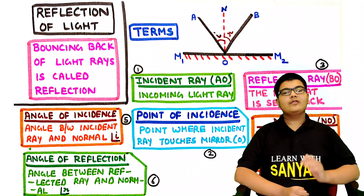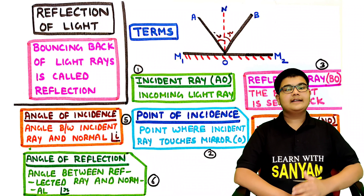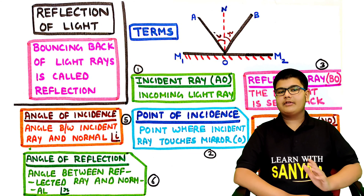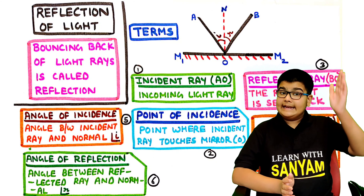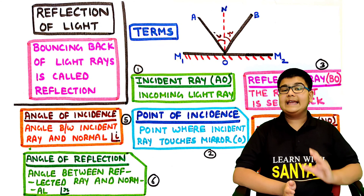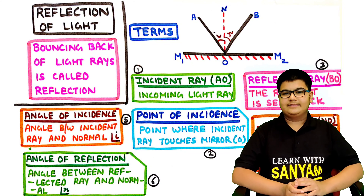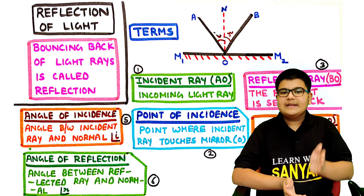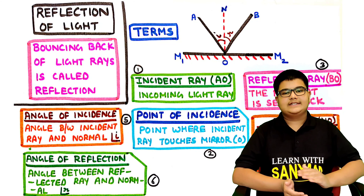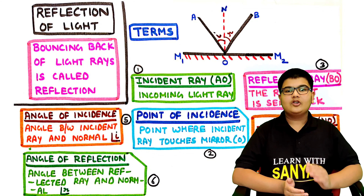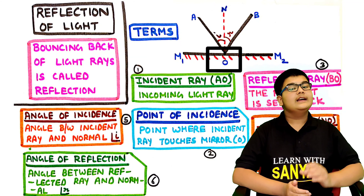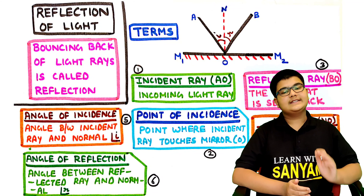The bouncing back of light rays is called reflection. Now before learning more about reflection, let's understand the terminology associated with it. First, incident ray — this is the incoming light ray. So in this figure, AO is the incident ray. Second, point of incidence — the point where the incident ray touches the mirror is called the point of incidence. If we take the mirror to be M1M2, then point O is where ray AO touches the mirror. Therefore, O is the point of incidence.